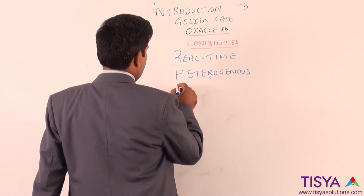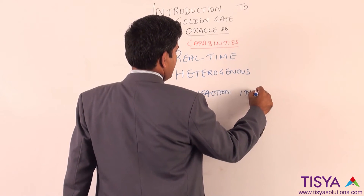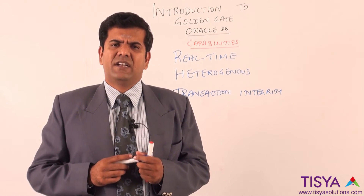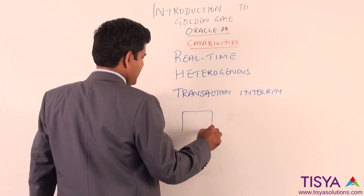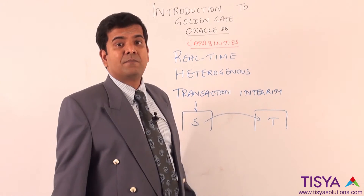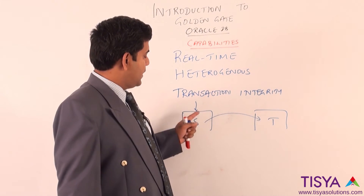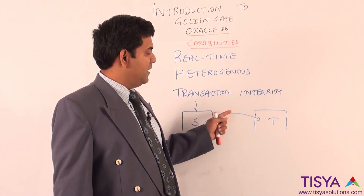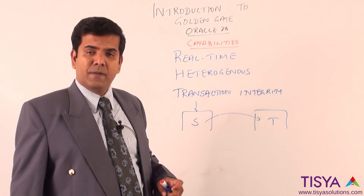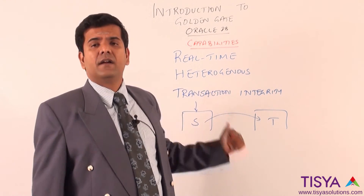Another very important benefit of Golden Gate is that it takes care of transaction integrity. From the source to the target, the order of the transactions done on the source is preserved so that when the transactions apply on the target, they are in the same order in which they happened on the source. This ensures there are no integrity issues with respect to the data when replicating to the target. The log change-based capture mechanism groups transactions in the same order and applies them in the same way they were entered into the source.